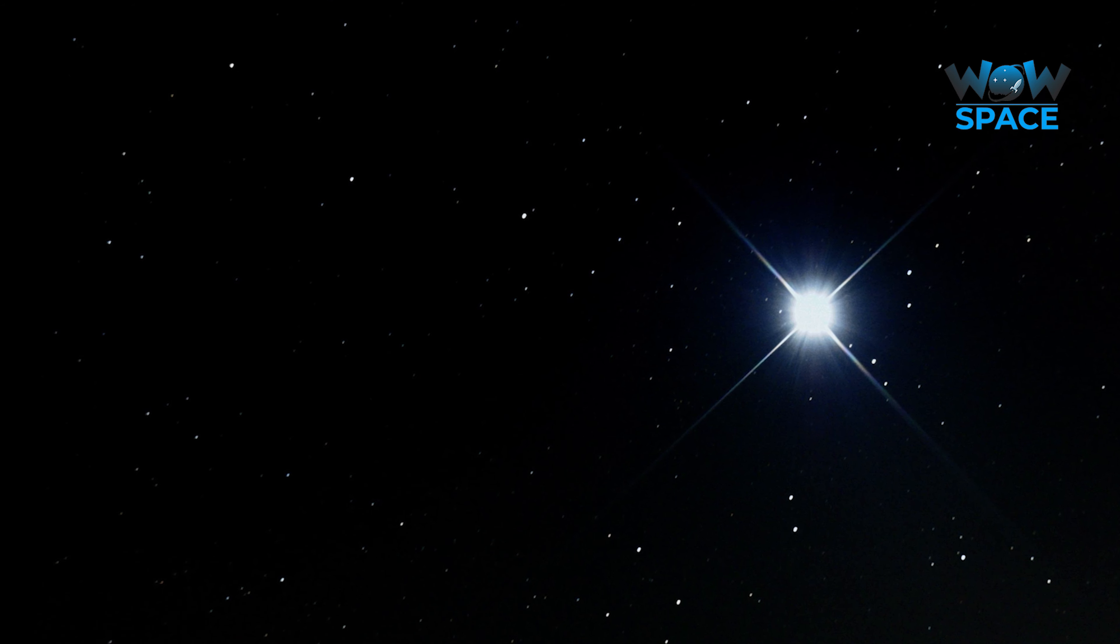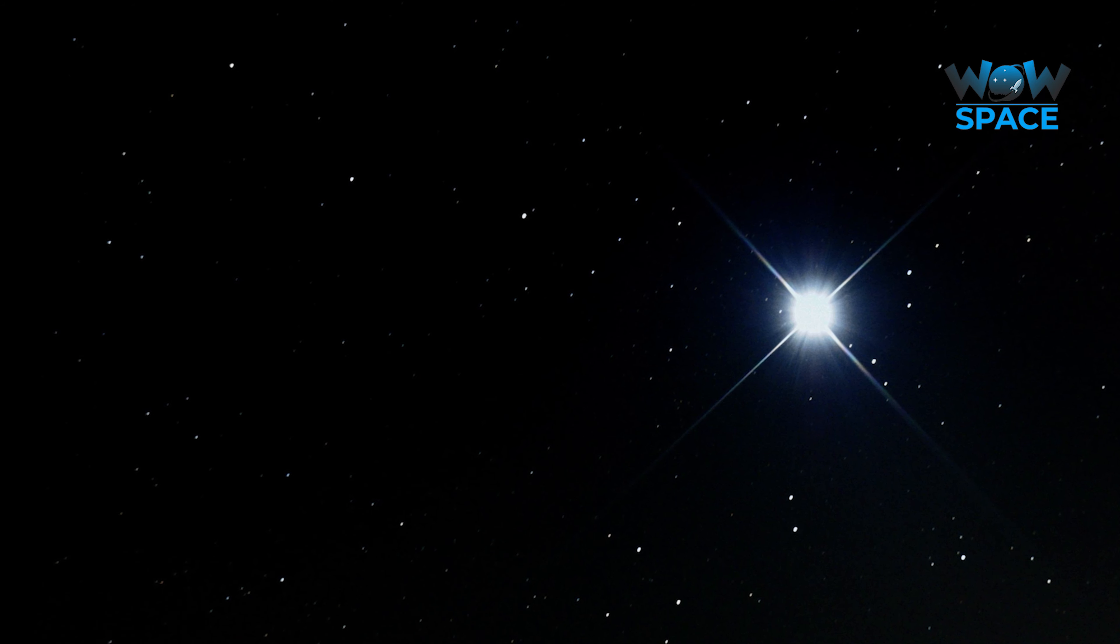So, say we see a very blue star that we want to know the distance to. Once we know the star's precise color, we can tell how bright it would be if it were right next to us. We can then measure the star to see how bright it is from our perspective. Combining this with our extrapolated data, we can predict how far away the star really is.